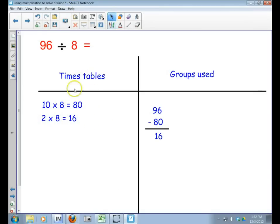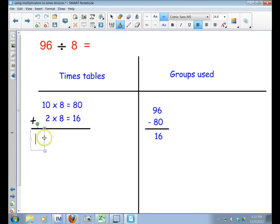So now I've got something that looks pretty similar to the break-apart method. I've got my 10 and my 2 here, which I can add: 12 times my groups of 8, and that equals 96.